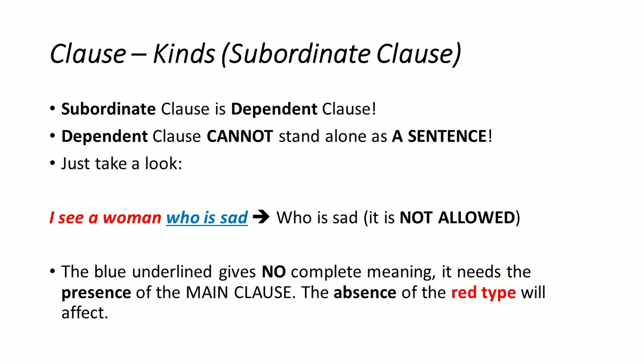Now about subordinate clause: a subordinate clause is called a dependent clause. A dependent clause cannot stand alone as a sentence — it does not have a complete meaning. For example, in 'I see a woman who is sad,' if you take 'who is sad' alone, it is not allowed because it is not clear who is sad. The blue underlined part keeps no complete meaning; it needs the presence of the main clause.